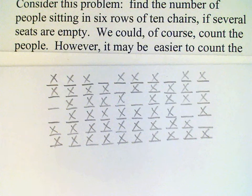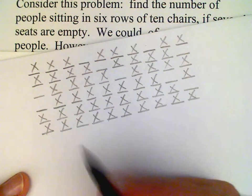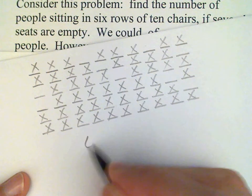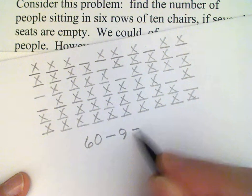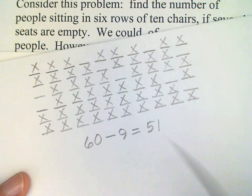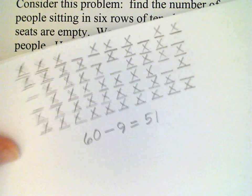Now there's nine empty seats, and so that means that the number of people must be the total, which is 60, minus the number of empty seats, or 51. And we could confirm that by direct count of the X's.